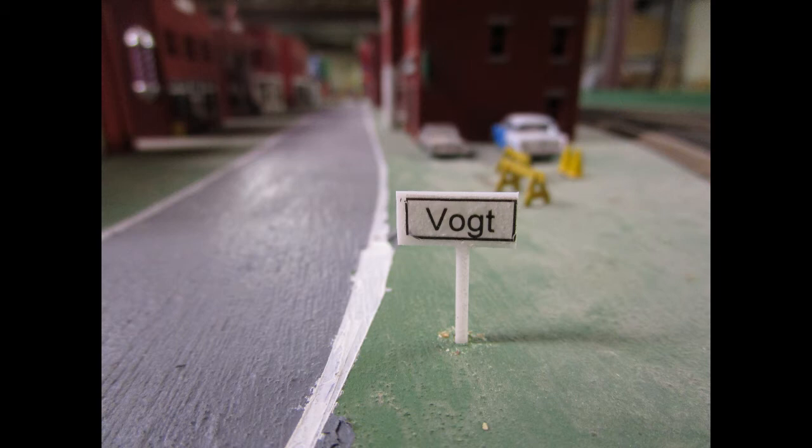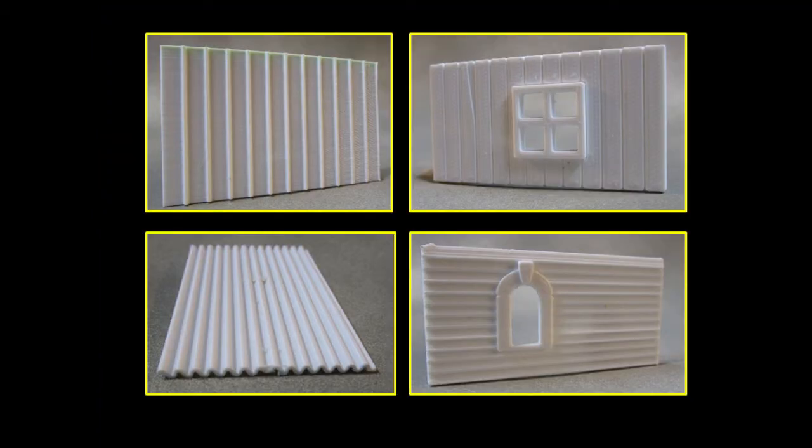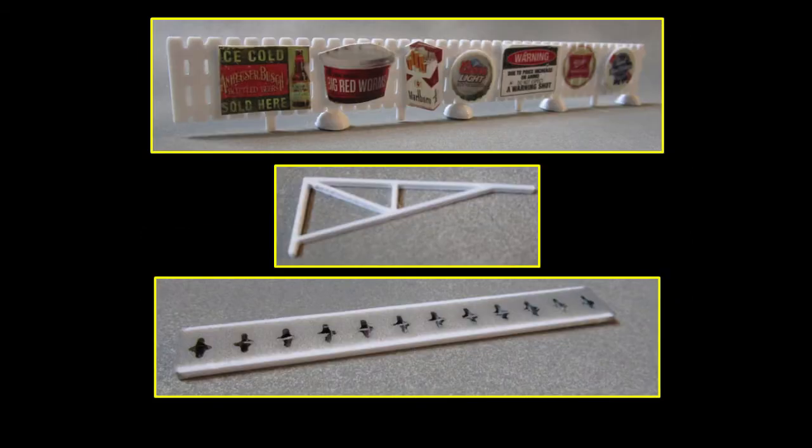Starting with simple rectangles to create city limits and other signs, we will progress to making siding and roofing. Using normally hidden PowerPoint tools, we will punch holes in shapes to create windows.